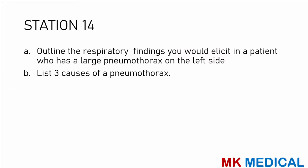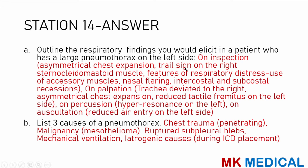Station 14: outline the respiratory findings you would elicit in a patient with a large pneumothorax on the left side. A pneumothorax is similar to a pleural effusion in signs, with the key difference on percussion: pneumothorax gives a hyper-resonant note whereas pleural effusion gives a stony dull note. On inspection: asymmetrical chest expansion with a tracheal sign on the right side, features of respiratory distress. On palpation: trachea deviated to the right, asymmetrical chest expansion, reduced tactile fremitus. On percussion: hyper-resonance. On auscultation: reduced air entry. Three causes: chest trauma or penetrating injuries, malignancies such as mesotheliomas, rupture of subpleural blebs, mechanical ventilation, or iatrogenic causes such as during intercostal chest drain placement.